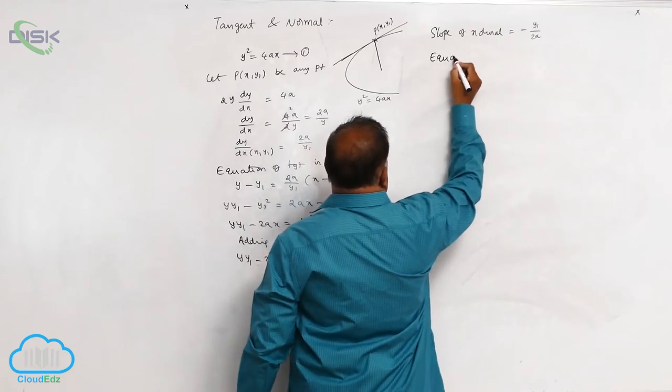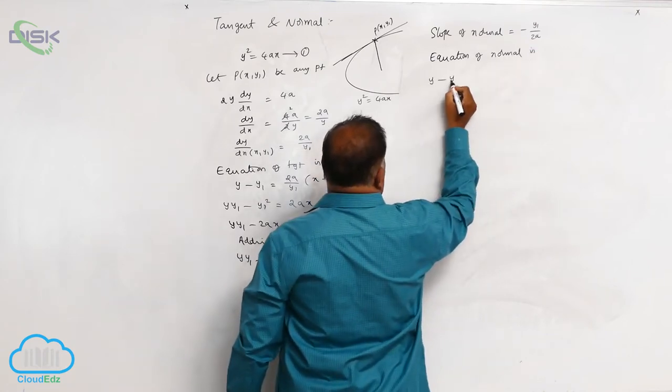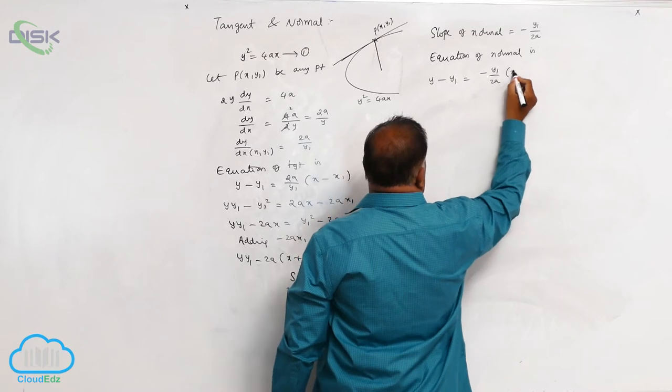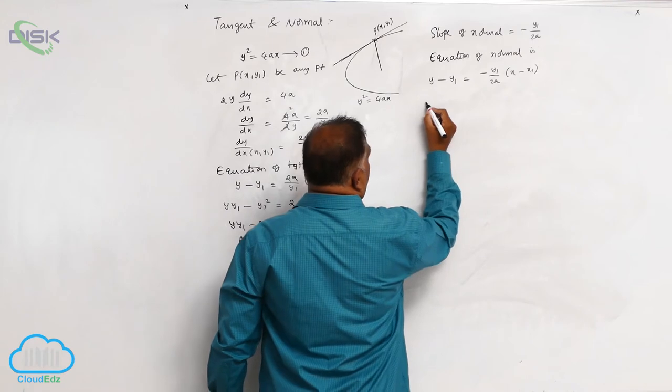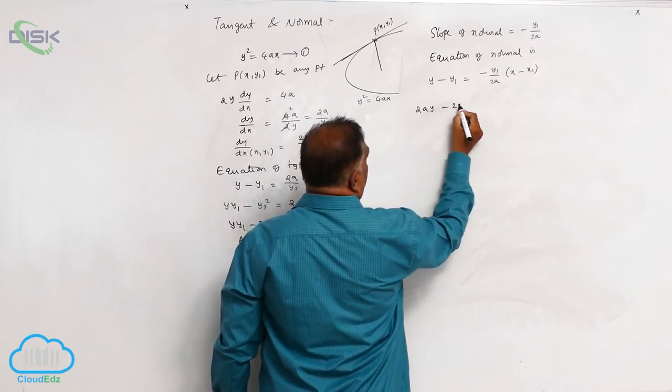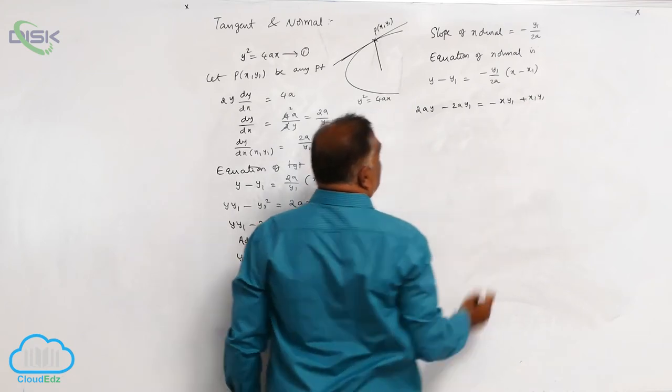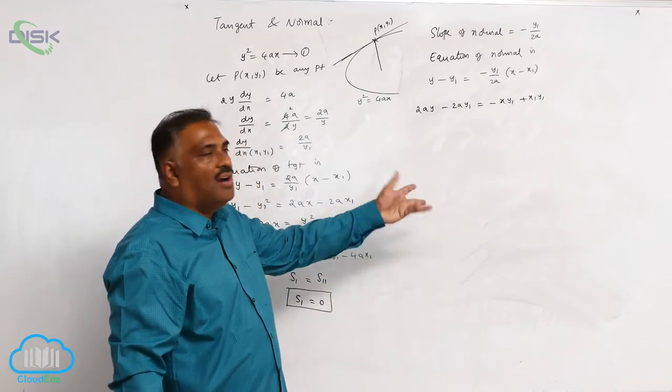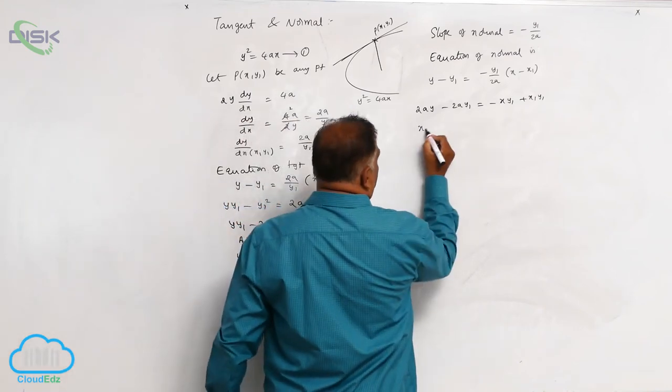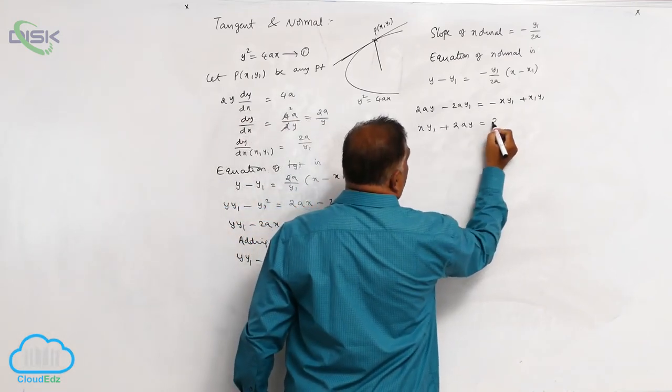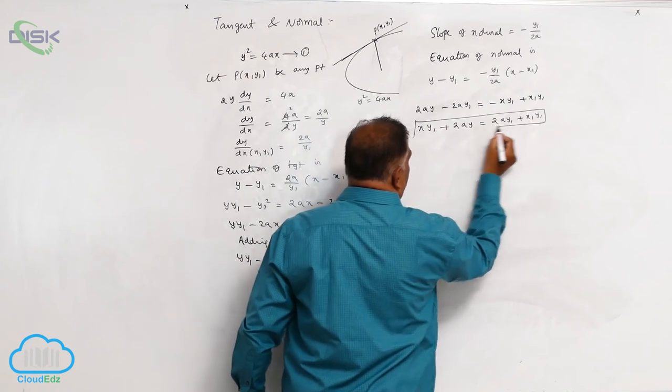The equation of normal is given by y minus y1 is equal to minus y1 by 2a into x minus x1. This becomes 2ay minus 2ay1 is equal to minus xy1 plus x1y1. You can simplify in a further fashion like this: xy1 plus 2ay is equal to 2ay1 plus x1y1. This is the equation of normal.